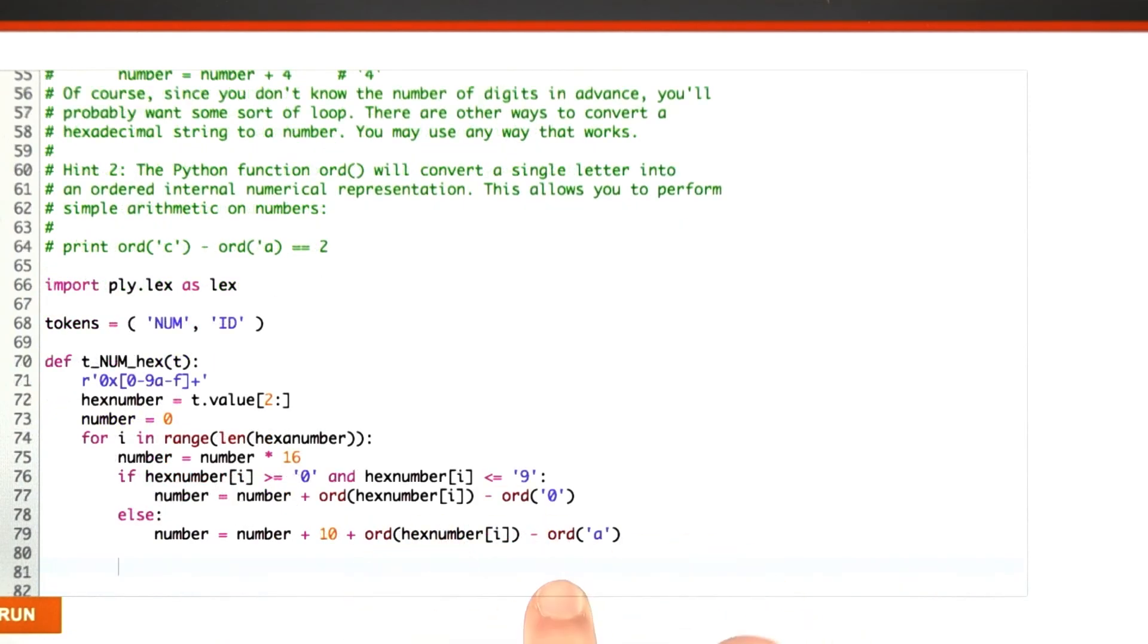Here, I'm going to handle the case where the current digit is a letter, a through f. I'm going to find out how many places away from a it is, and I'm going to add 10. So a is going to equal 10, b is going to be some number minus the value of a, which is going to give 1, so 1 plus 10 plus our number. We're going to add 11 to the number because b represents 11, and so on.